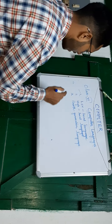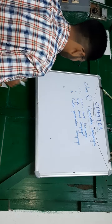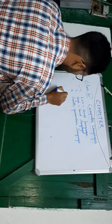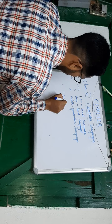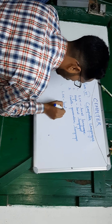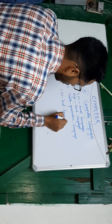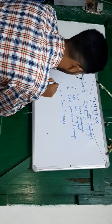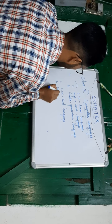The two categories of computer languages are: one, low-level language, and two, high-level language.